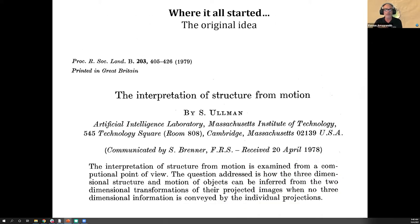So where it all started. This is the interpretation of structure from motion from the Proceedings of the Royal Society of London, 1979, by S. Ullman from the Artificial Intelligence Lab at MIT. This is coming from computer science, basically a computer vision concept. The abstract says the interpretation of structure from motion is examined from a computational point of view. The question addresses how the 3D structure and motion of objects can be inferred from the 2D transformations of their projected images when no 3D information is conveyed by the individual projection. It's a mouthful, but it's saying what that initial cartoon was illustrating.